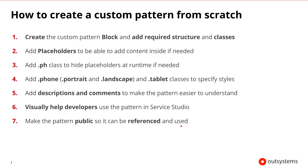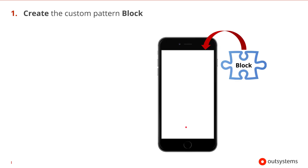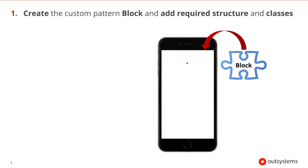Let's walk through each of these steps as we build an example pattern. In this example we'll be building a card pattern and we'll start the same way we would start any new pattern, which is by creating a new block. Then we can add the required structure and CSS classes.